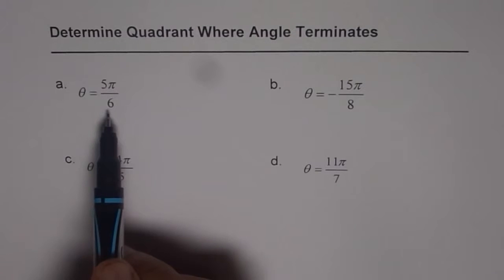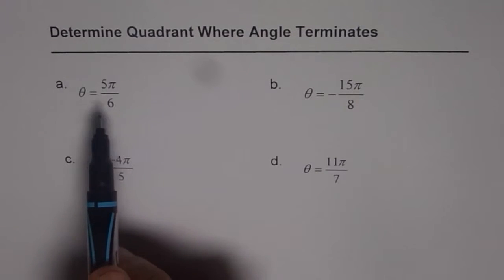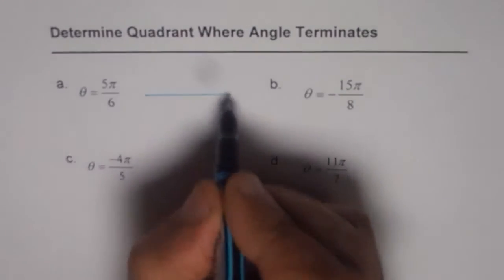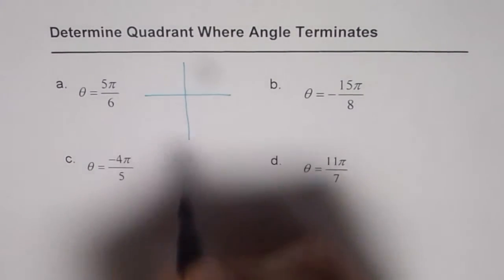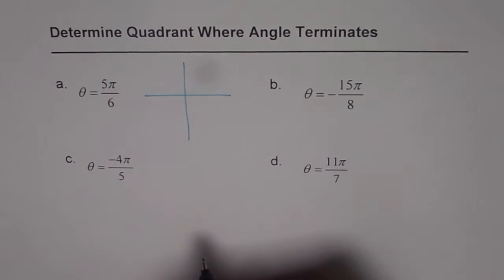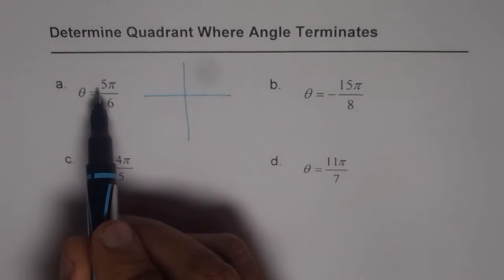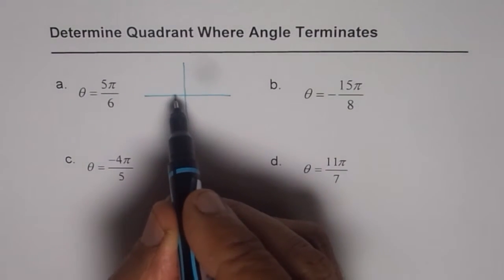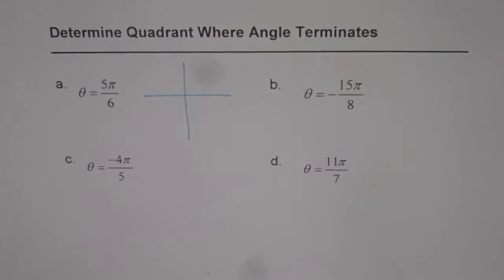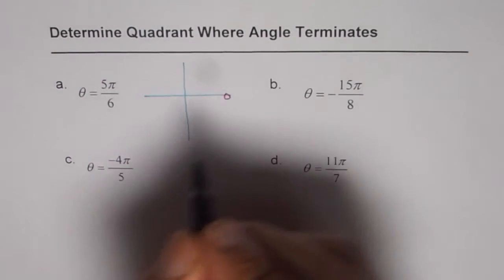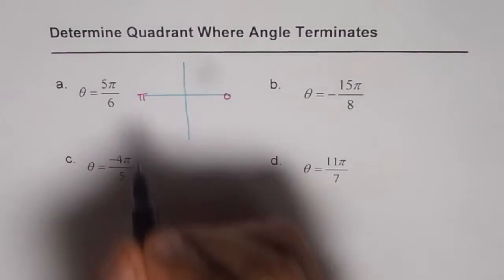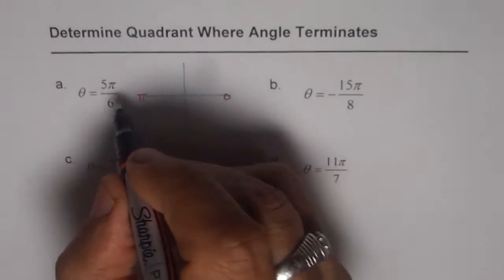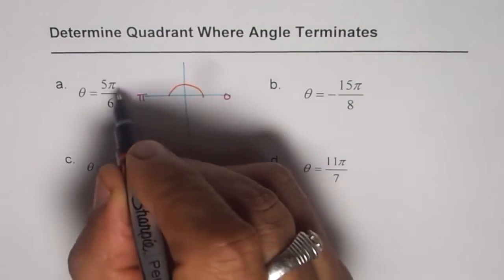A is theta equals to 5 pi by 6. We want to see where this angle will terminate. When the angle is positive, as you know, we have to move the terminal arm counter clockwise. When it says 5 pi by 6, that means your pi, which is this portion, right? So pi is, this position is 0 as far as the angle is concerned and there you have pi, right? So your pi is divided into 6 portions and you get 1 portion as pi by 6.